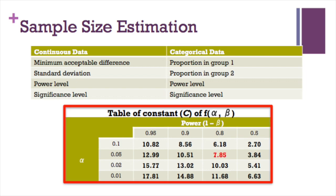The equation may also contain the value of constant C. Look at the table of constant C. The value of C depends on the alpha and power of study. If alpha is at 0.05 and power at 80 percent, the C value will be at 7.85.